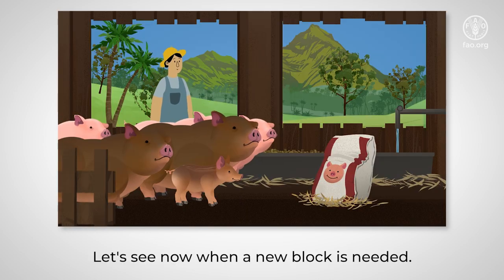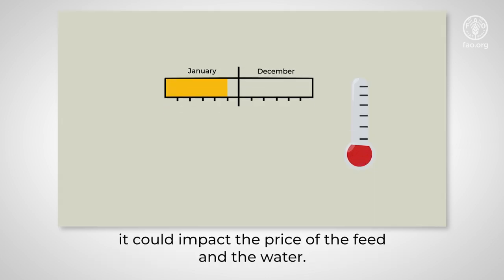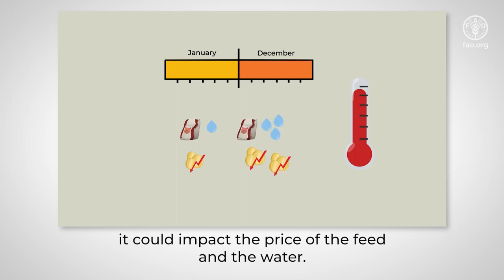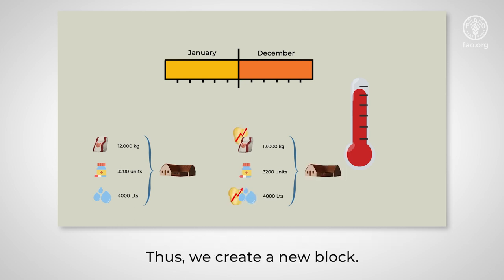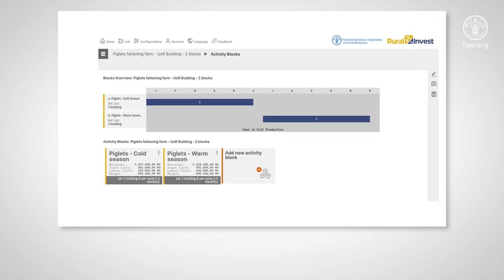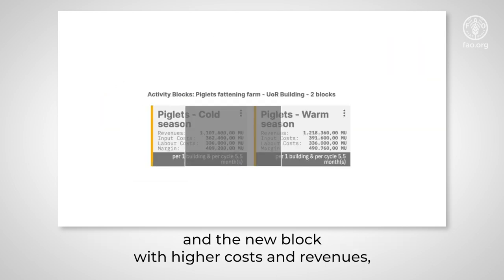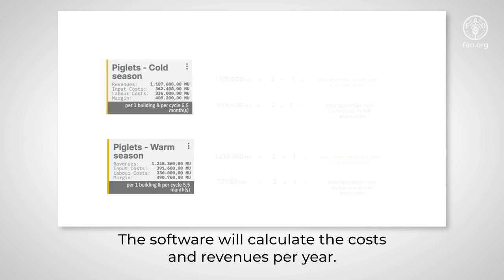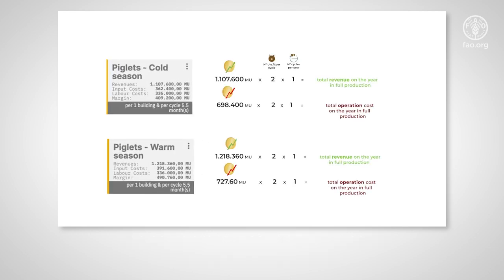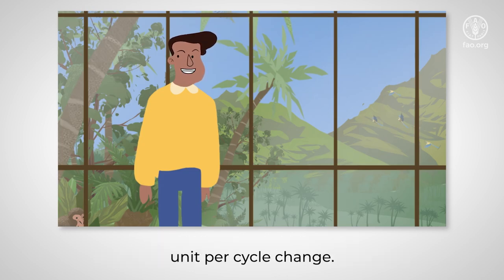Let's see now when a new block is needed. If in the second half of the year the temperature is higher, it could impact the price of the feed and the water. We don't have the same operation costs and revenues in both cycles. Thus, we create a new block. We will have one block with the same costs and revenues as before, and the new block with higher costs and revenues, but both with one cycle per year. The software will calculate the costs and revenues per year. Different blocks are needed when costs and/or revenues per reference unit per cycle change.